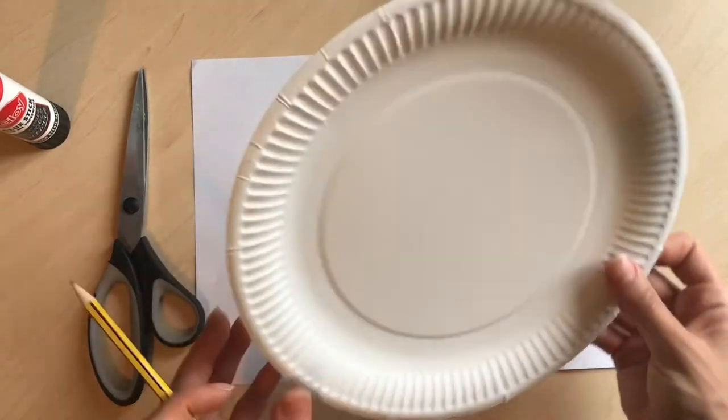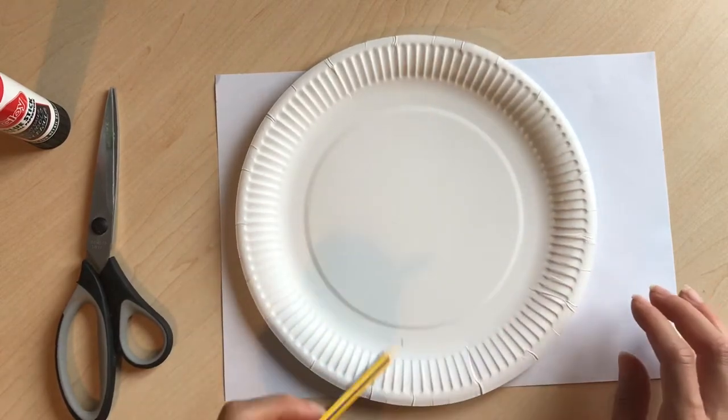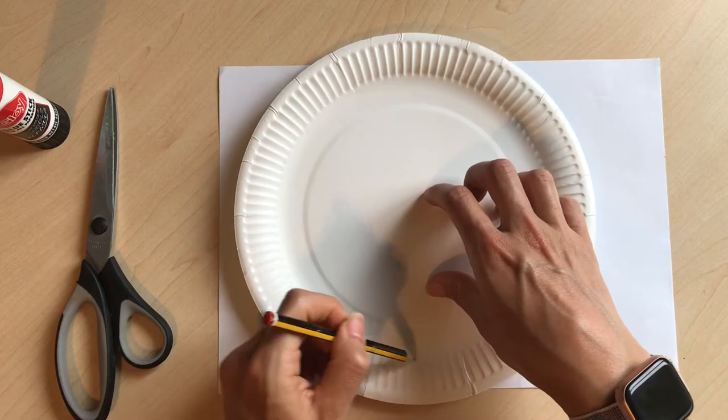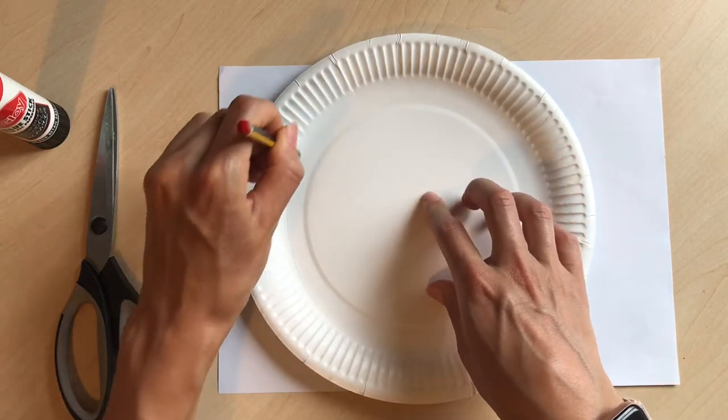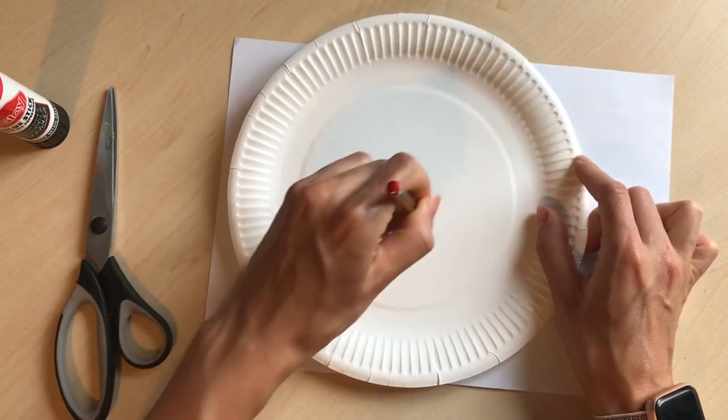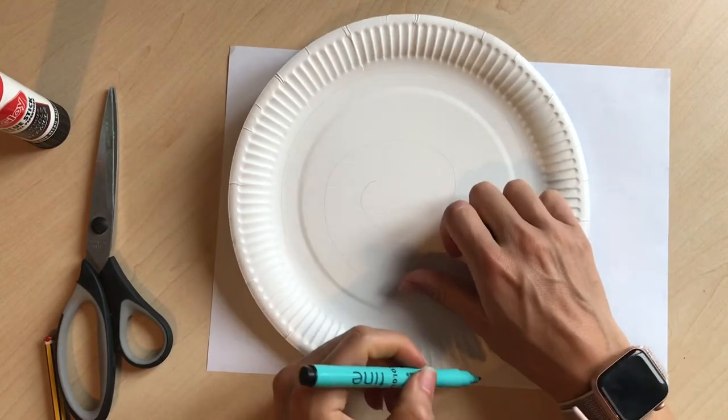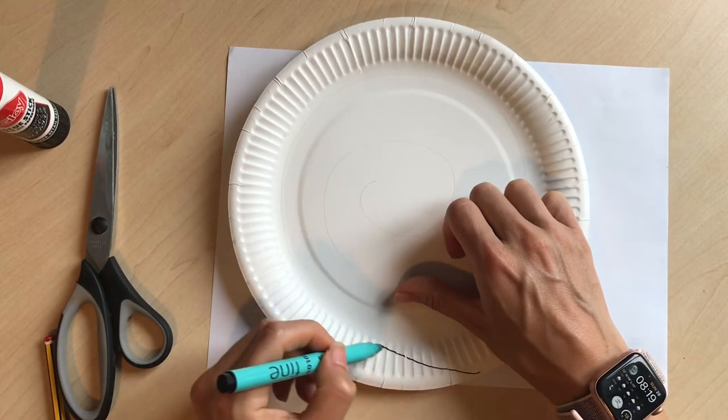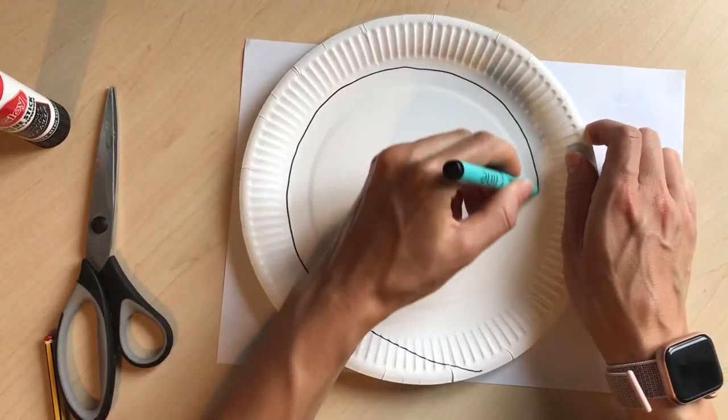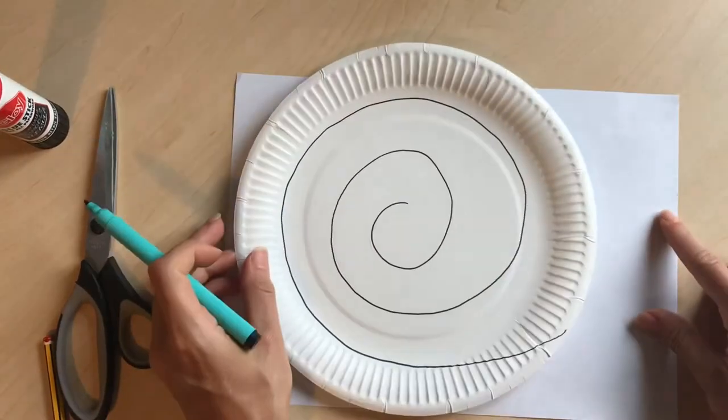So the first thing we're going to do is design our paper plate snail shell and it's a little bit like we did with the snake. You're just going to start here and you're going to go all the way around creating a shell effect like that and then what I would suggest is possibly going over it in a black pen so that you can see it when you come to doing your designs because you're going to design some pattern on the shell just like that.